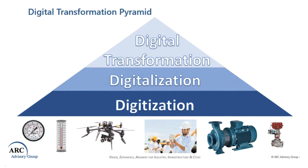Consider this pyramid. Digitization is at the foundational level, then above digitization is digitalization — this is American spelling, you can use 'S' instead of 'Z'. So digitization is the base, then digitalization, and finally digital transformation. The author of this article calls this the digital transformation pyramid. Digitization and digitalization are considered synonyms even by standard dictionaries like Oxford, Cambridge, and Merriam-Webster, but there is a difference.